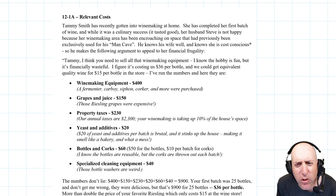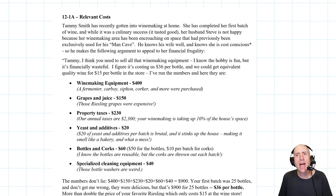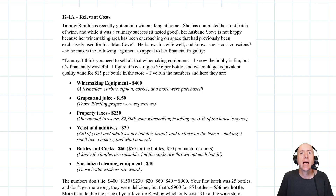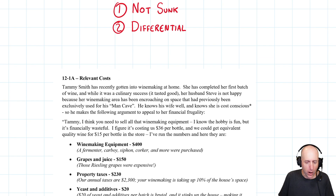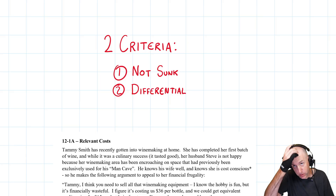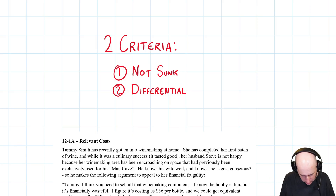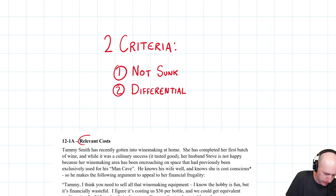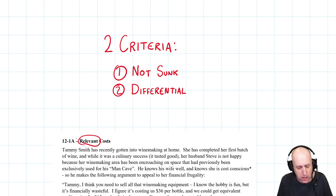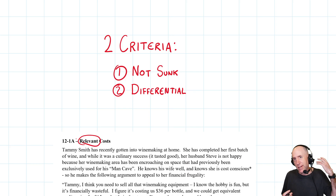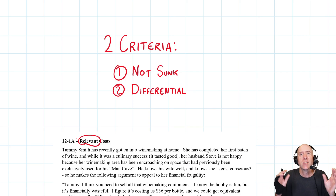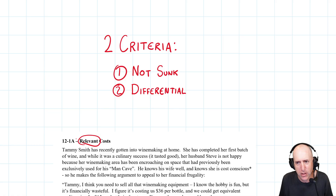Let's take a run through problem 12.1. This problem has us identifying which costs are relevant and which costs are not in making a decision. I want to remind you — I introduced this in the module intro video — really two criteria to determine if a cost is a relevant cost. One is that the cost is not sunk. In other words, a sunk cost means you've already paid the money, so it's not going to be relevant to a future decision.